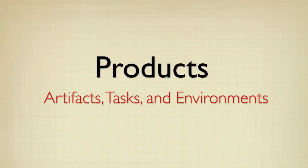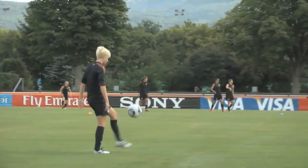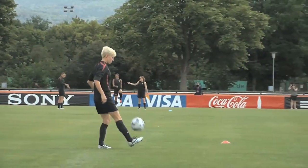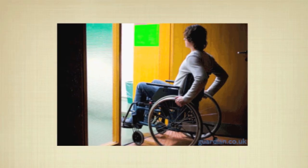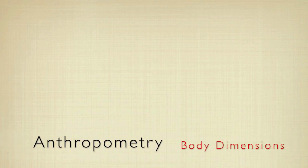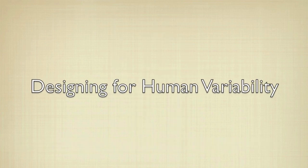Products can be defined as artifacts, tasks, and environments. A number of factors influence how people interact with products around them — for example, how they sit in a chair, how they kick a soccer ball, how they use a crutch or a wheelchair, and how they perform different reach, lifts, and other tasks. Anthropometry, or body dimensions, influence how people physically interact with products. In this video, we will learn about the role of anthropometry in designing for human variability.